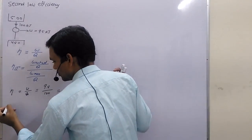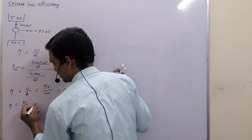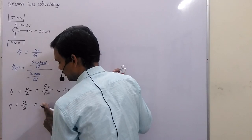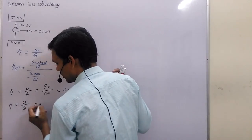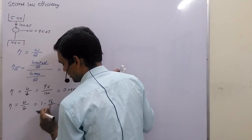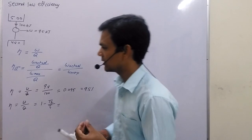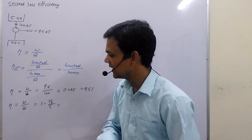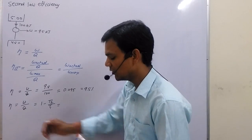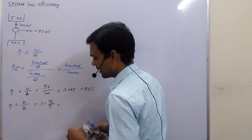If we compare with the maximum possible situation, then W maximum equals Q times (1 minus T2 upon T1), because the best possible engine — the case from where we receive the maximum amount of work — is the Carnot engine. So we solve this using the Carnot engine.